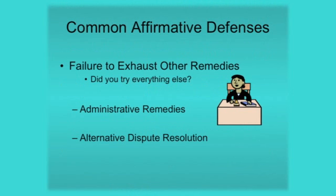Finally, another common affirmative defense is the failure to exhaust other remedies. The court wants you to consider whether you tried everything else first before filing a case in court. This comes up most commonly in two types of cases: first, cases where there are administrative remedies, such as cases involving a government agency; and second, cases such as contract cases, where there may be a clause requiring the parties to use alternative dispute resolution means before filing a case in court.